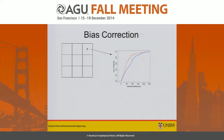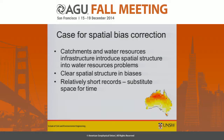Generally when we do bias correction, what we're doing is at a single grid cell comparing the distribution or some statistical properties of the observations to the model, and we apply some sort of correction at that single grid cell, then move to a different grid cell with a different bias correction. What I'd like to argue is that we can improve that grid cell by grid cell approach by considering corrections in space.